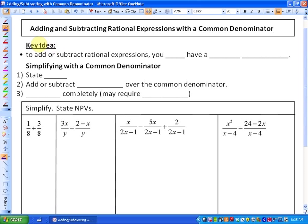A key idea for adding and subtracting fractions or rational expressions is that you must have a common denominator. The denominator has to be the same in order to add or subtract fractions or rational expressions.